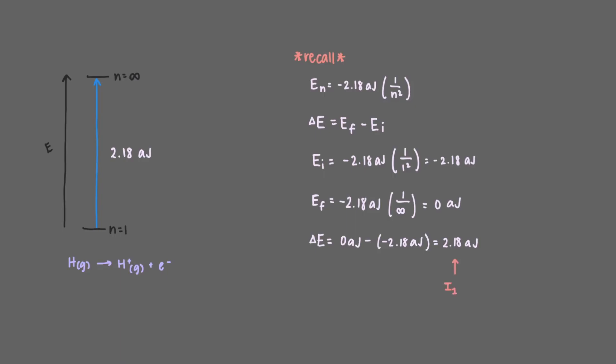This is I sub 1, the first ionization energy of hydrogen. Well, hydrogen only has one ionization energy since it only has one electron. But what would happen if the energy of the light were any larger?